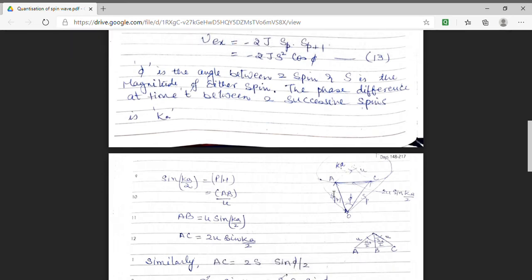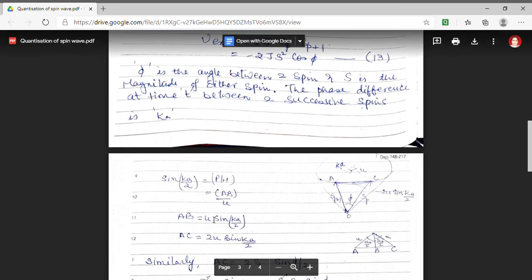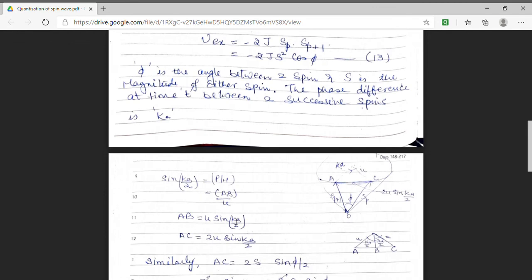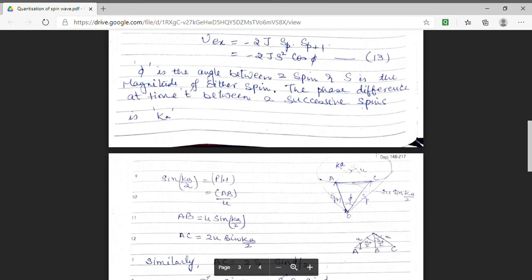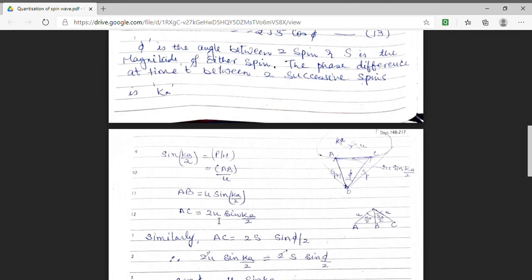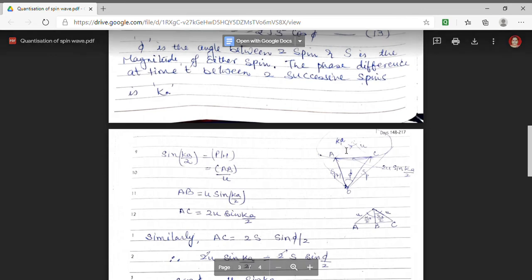For this purpose, I am dropping a perpendicular from upper point to the line AC. This is shown here. As the phase is Ka, this small triangle will have an angle Ka by 2. So from this triangle, I can find the value of length AB. Length AB will come out to be u sin Ka by 2. As amplitude has a length equal to u. So here, I have shown the precession of spins and the length AC comes out to be minus 2u sin Ka by 2. This is obtained using the phase Ka.